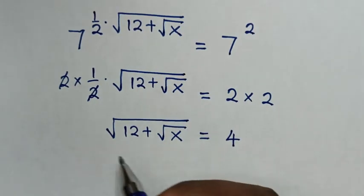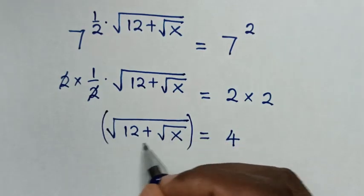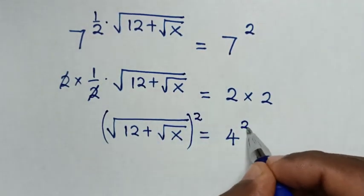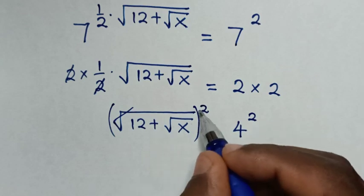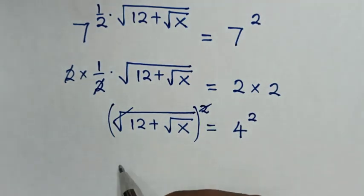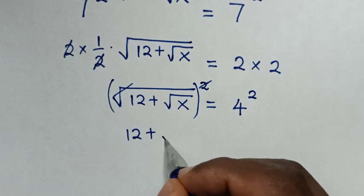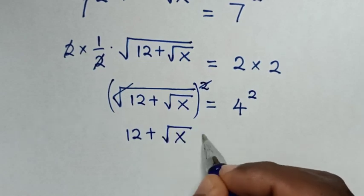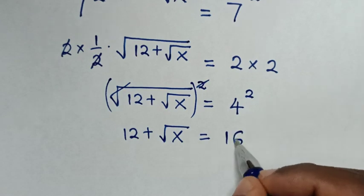Then, in the next step, to remove this square root, we'll square both sides. This square root will cancel with this square. Then it will be: 12 plus square root of x is equal to 4 squared, which is 16.